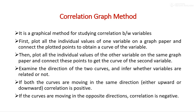In other words, correlation is negative when one variable increases and the other variable decreases, and vice versa — when one variable decreases and the other increases, then the variables are negatively correlated.